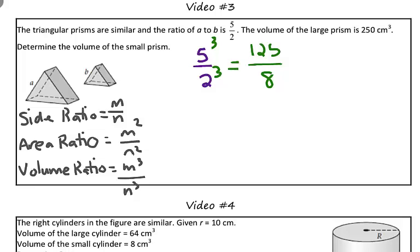So, therefore, the volume ratio, which is what we just found, between these two similar prisms is 125 over 8. Now, we can use this to set up a proportion to solve for the missing volume.